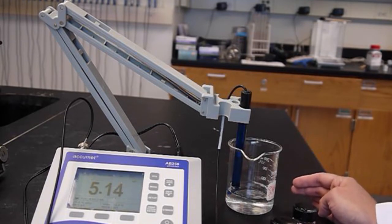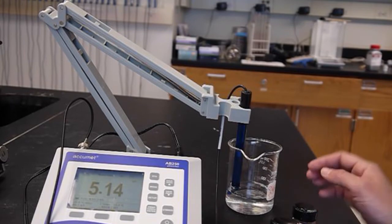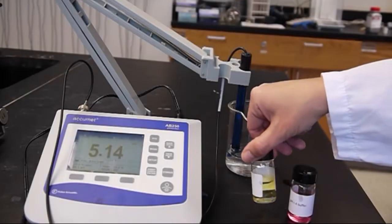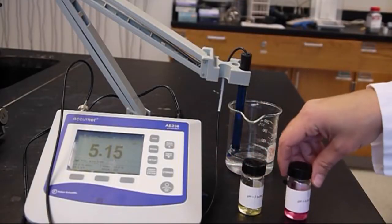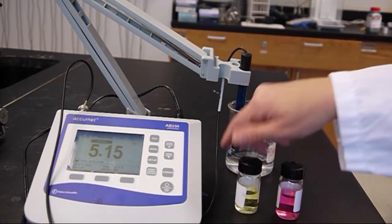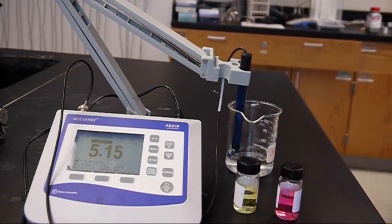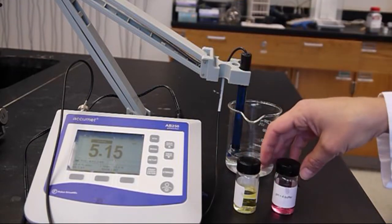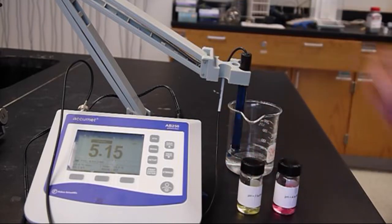So before we run a measurement we need to calibrate our pH meter. We're going to use pH 7 buffer and pH 4 buffer for our calibration. These are colored solutions. They have a dye in them so it makes it easy for determining which is which so you don't get them mixed up. That's all that's really there for.